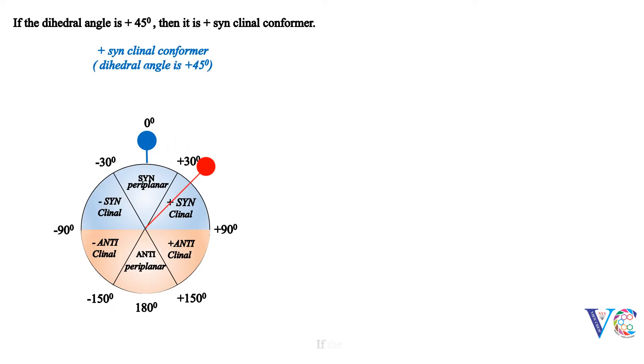If the dihedral angle is plus 120 degrees, then it is plus anticlinal conformer.